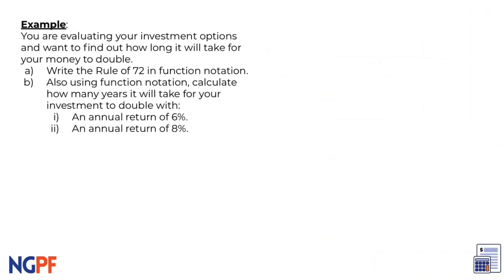Let's try this example. You are evaluating a few different investment options and want to find out how many years it will take for your money to double. Let's first write the Rule of 72 in function notation. Recalling from the previous slide, we know that we can find the number of years it will take to double by dividing 72 by the rate of return. If x is the rate of return, go ahead and write a function for the Rule of 72.